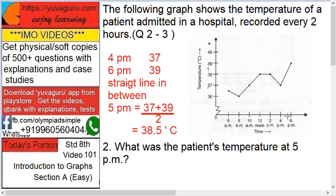Since 5 is exactly in the middle on the x-axis, this temperature will also be in the center on this line. How to find it? 37 plus 39 divided by 2, that is 38.5 degrees Celsius.